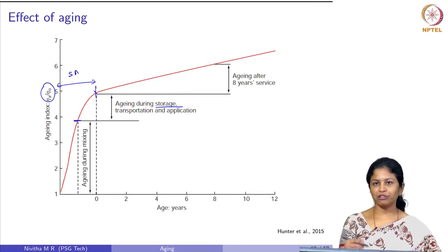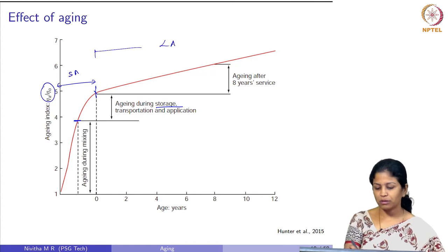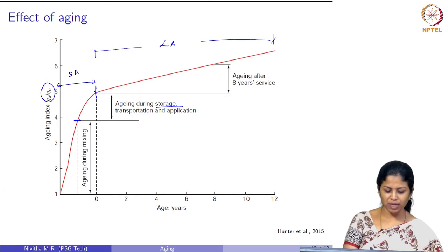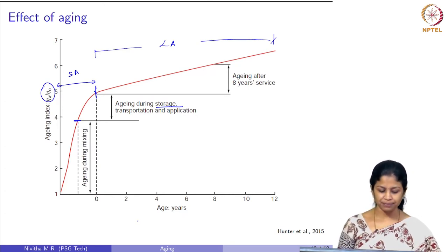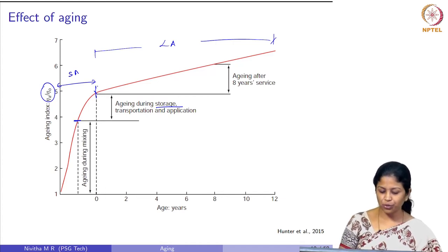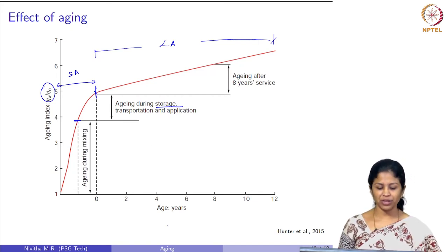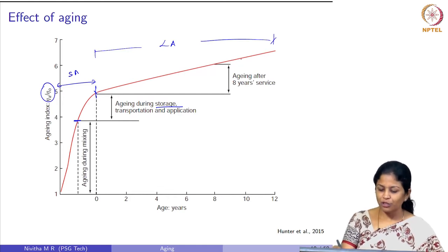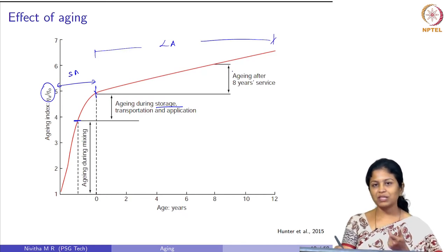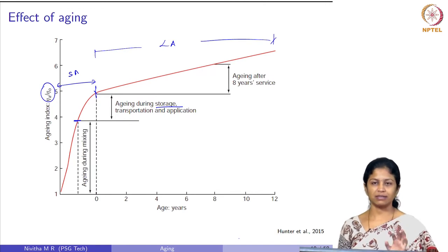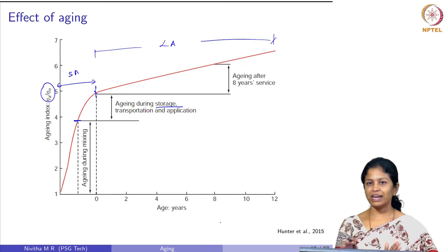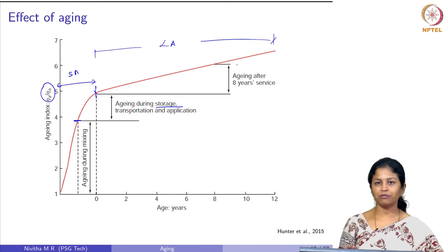The figure is divided into two short-term aging stages — mixing, and storage/transportation/application — and long-term aging. During mixing, there is a 4-times increase in viscosity. There is a further increase during storage, transportation, and application, so at the end of short-term aging there is about a 5-times increase in viscosity. After 8 years of service, the aging index goes from 5 to 6 — only a small increase. Most of the aging happens during the short-term phase, and after that the amount of aging is relatively lower.